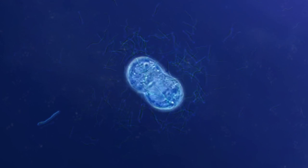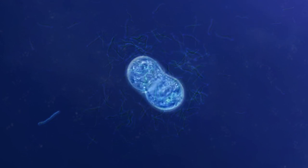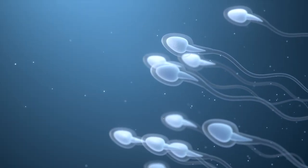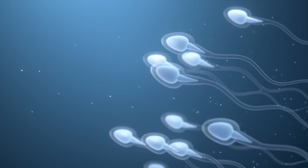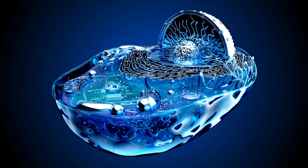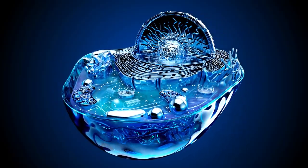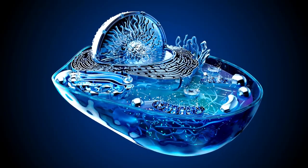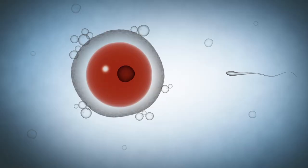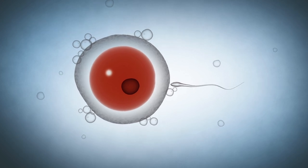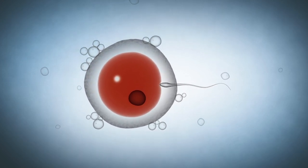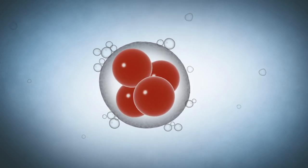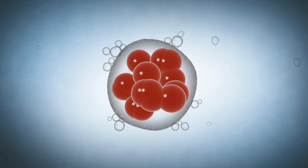The reprogrammed cells are then exposed to a carefully orchestrated series of chemical signals, nurturing their development into fully functional gametes. Scientists monitor this process closely, ensuring the cells undergo the necessary stages of maturation to become viable reproductive cells. Once the gametes are successfully developed, they can be used for fertilization. In the case of sperm cell creation through biotechnology, these artificial gametes can be used to fertilize an egg through in vitro fertilization. Similarly, artificial eggs can be fertilized with conventional sperm.